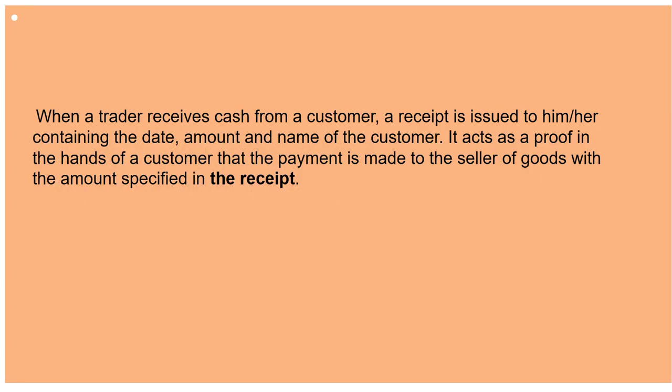When a trader receives cash from a customer, a receipt is issued to the customer. It contains the date, amount, and name of the customer. It acts as proof in the hands of the customer that payment has been made to the seller with the amount specified in the receipt. The original receipt is issued to the customer, while the duplicate copy is kept for future reference, containing date, amount, name of the party, and nature of the payment.